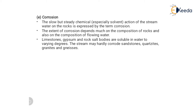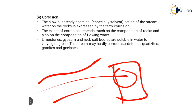Corrosion is the slow but steady chemical action of stream water on rock. The extent of corrosion depends on the composition of the rock and the composition of the water. Limestone, gypsum, and rock salt are soluble in water to varying degrees. The stream may hardly affect sandstone, quartzite, and granite. Sometimes rocks that the river travels across get considerably dissolved into the water, or if the water becomes acidic due to atmospheric CO2, it will dissolve rocks that react with it.